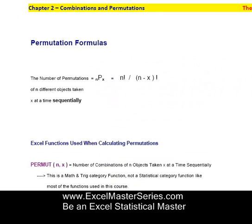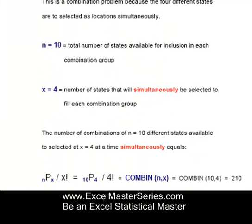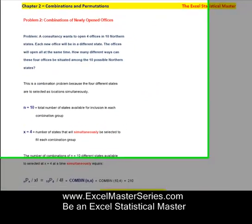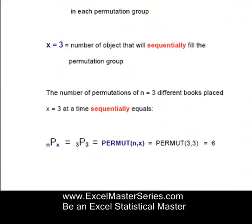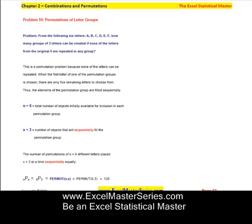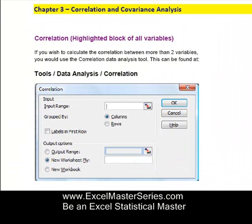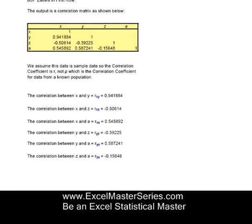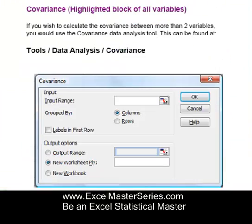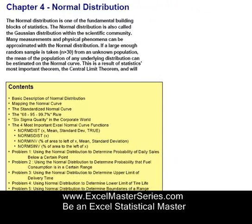Here are combinations and permutations. This will save you a lot of time because there's a lot of manual calculation involved. We walk through problem after problem, looking at combinations and permutations in all different ways — you'll be an expert and able to do it in Excel. It's really the fastest way to climb the statistical learning curve. Correlation and covariance — walking through screenshots, doing correlation between multiple variables, looking at the correlation matrix and covariance. I give you a thorough explanation of the difference between correlation and covariance.